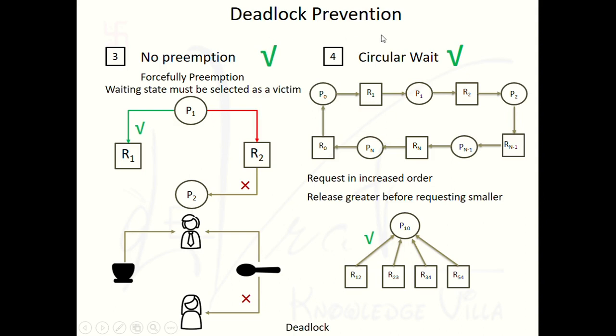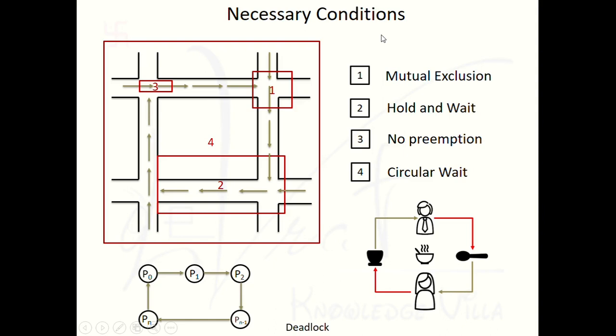To prevent the deadlock, there are four necessary conditions: mutual exclusion, hold and wait, no preemption, and circular wait. These are the necessary conditions for a deadlock to occur. So if we want to prevent the deadlock, we have to break any one of these four conditions.